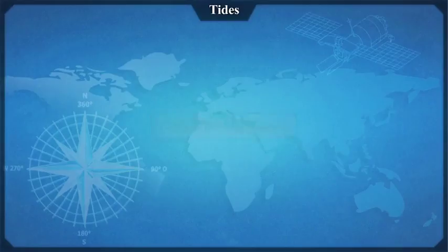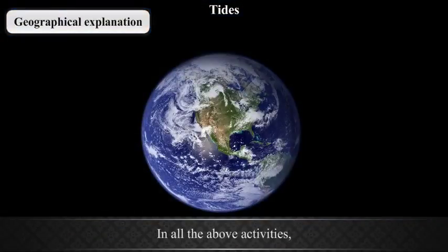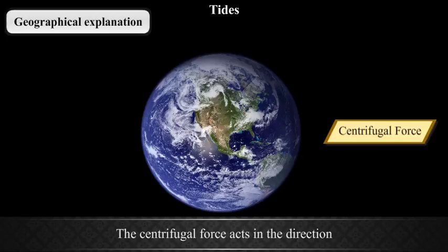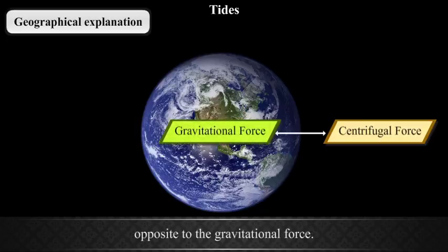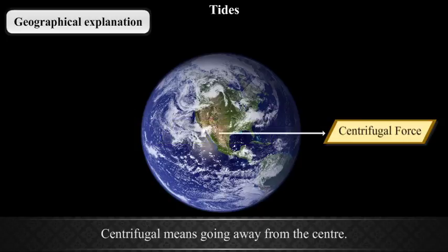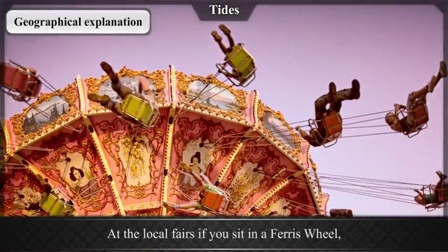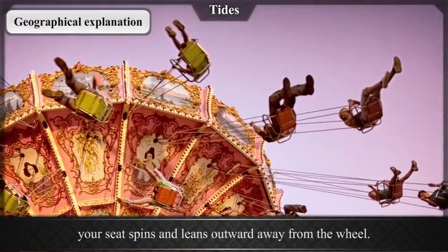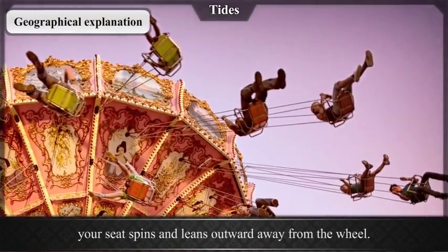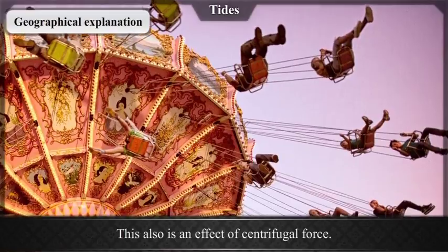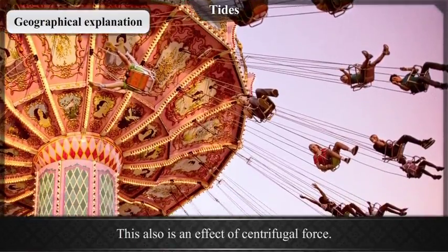Geographical Explanation. In all the above activities, the effect of the centrifugal force is visible. The centrifugal force acts in the direction opposite to the gravitational force. Centrifugal means going away from the center. At the local fairs, if you sit in a ferris wheel, your seat spins and leans outward away from the wheel. This also is an effect of centrifugal force.